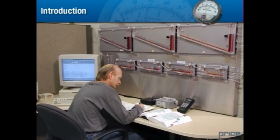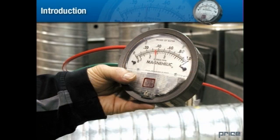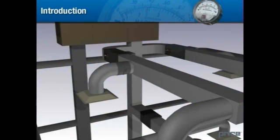Pressure measurements can be used to evaluate and improve the effectiveness of an HVAC system. With pressure measurements, we can detect undersized components that will cause restrictions in the airflow, overwork the air handler, and cause excessive noise. Pressure measurements can be used to ensure that airflow is balanced evenly throughout the duct branches and the appropriate amount of air is delivered to each zone.